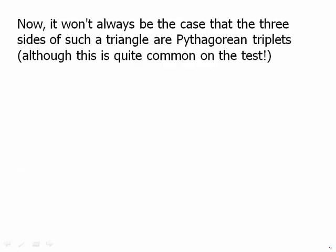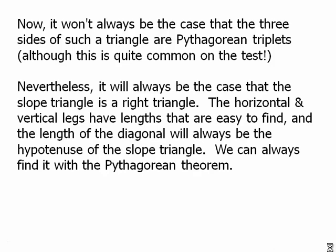Now it won't always be the case that the three sides of a triangle are nice, neat Pythagorean triplets, although this is quite common on the test. Nevertheless, it will always be the case that the slope triangle is a right triangle. The horizontal and vertical legs have lengths that are easy to find, and the length of the diagonal will always be the hypotenuse of the slope triangle. We can always find that length by the Pythagorean theorem. So we're using the Pythagorean theorem to find the distance between any two points. That's big idea number two.